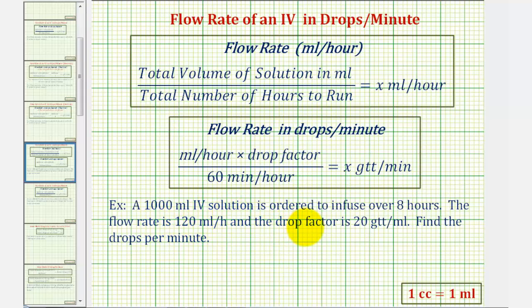A 1,000 mL IV solution is ordered to infuse over eight hours. The flow rate is 120 mL per hour, and the drop factor is 20 drops per mL. We want to find the drops per minute.